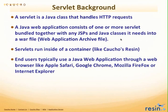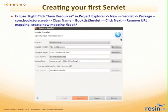A WAR file has the structure that the Java EE server is expecting, so you can deploy it as a single binary. Servlets run inside of a container like Caucho's Resin. End users typically use a Java web application through a web browser like Apple Safari, Google Chrome, Mozilla, or — God forbid — Internet Explorer. When you want to create your first servlet in Eclipse, there is a 'Create Servlet' GUI — you just right-click in the Project Explorer, select New Servlet, and enter the package and servlet name.